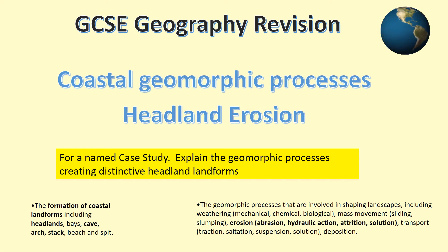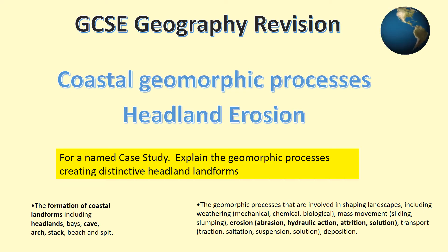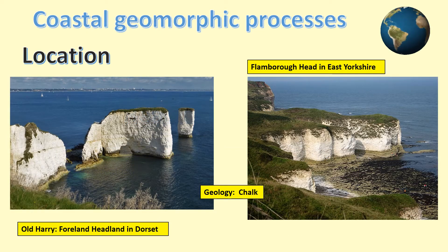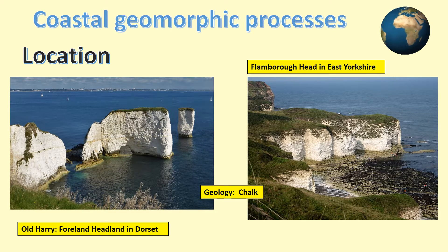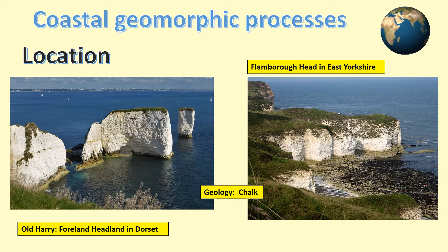This video presentation is all about how coastal headland erosion takes place from geomorphic processes. We will look at how the headland features are formed through the different erosional processes. You may have studied Flamborough Head in East Yorkshire or Old Harry located on the foreland in Dorset. These chalk headlands are both formed in the same way, and so the same geomorphic processes apply to both.